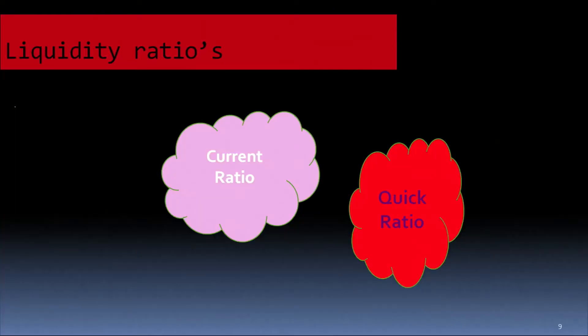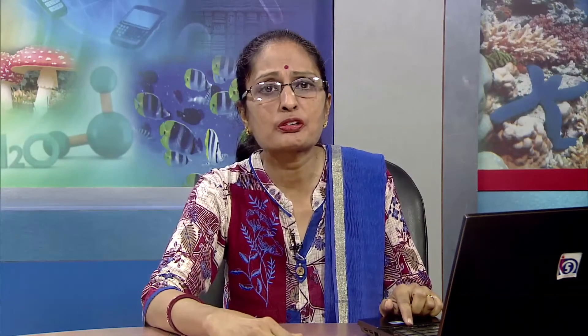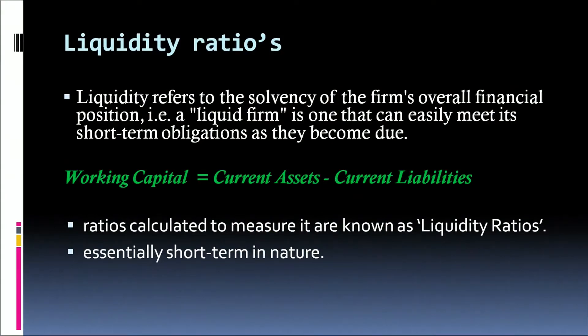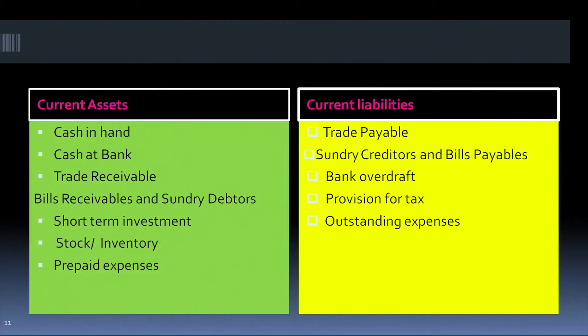We come to the first kind of ratio, which is the liquidity ratio. In this, we will study today the current ratio and the quick ratio. Liquidity ratios are those that help us to identify the solvency position of the firm in the short term, which means we are talking of current assets and current liabilities. Let us have a quick recap of what are current assets and what are current liabilities.